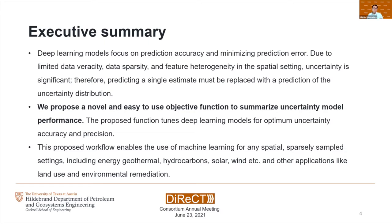We propose a novel and easy-to-use objective function to summarize uncertainty model performance. The proposed function tunes deep learning models for optimum uncertainty model accuracy and precision. This proposed workflow enables the use of machine learning for any spatial sparsely sampled settings, including geothermal, hydrocarbon, solar, wind, among other types of problems dealing with uncertainty.